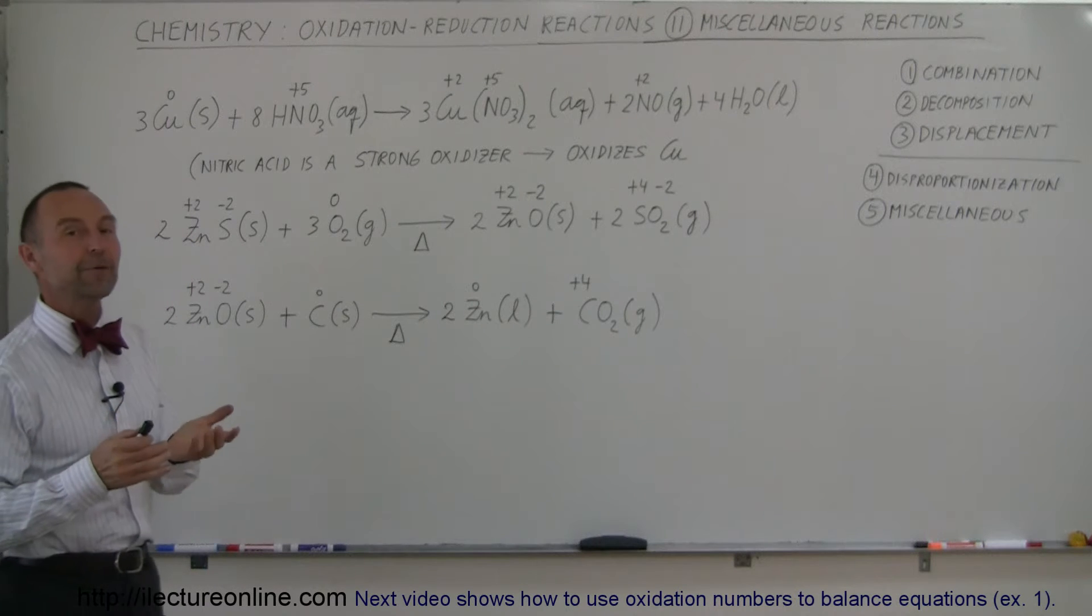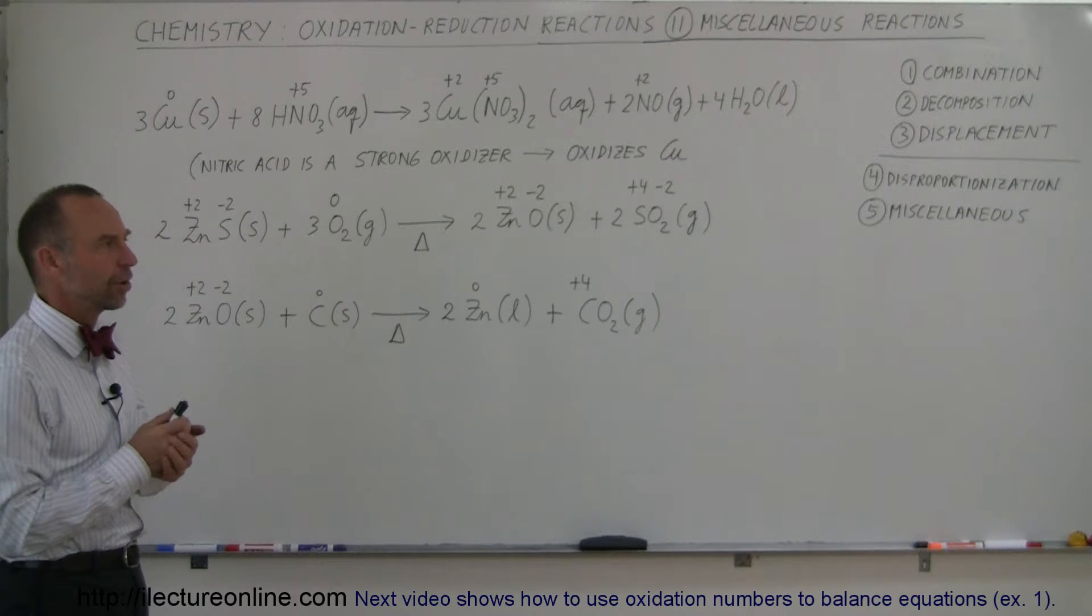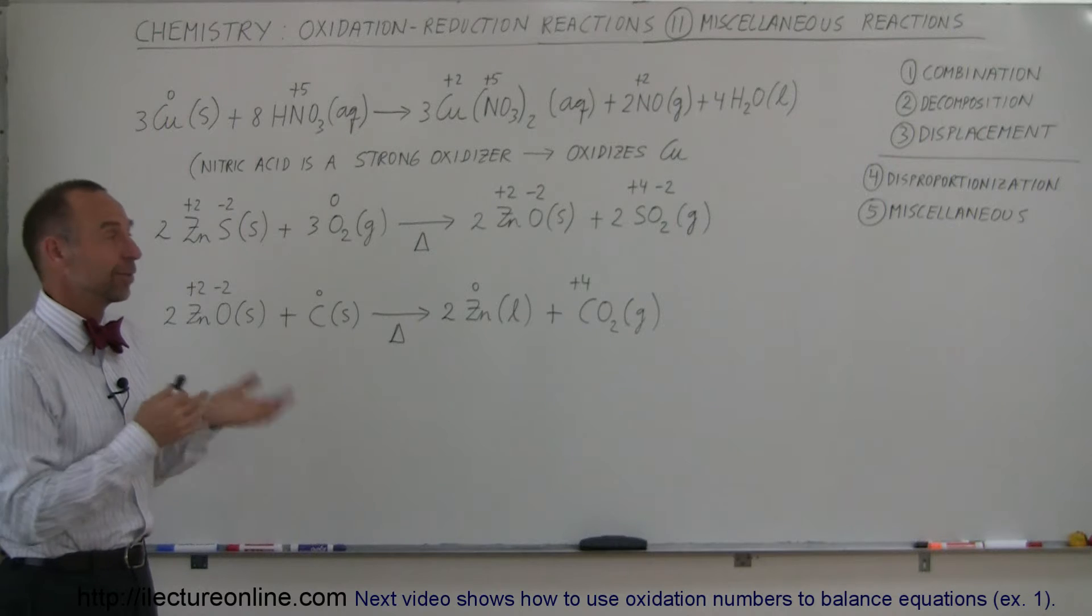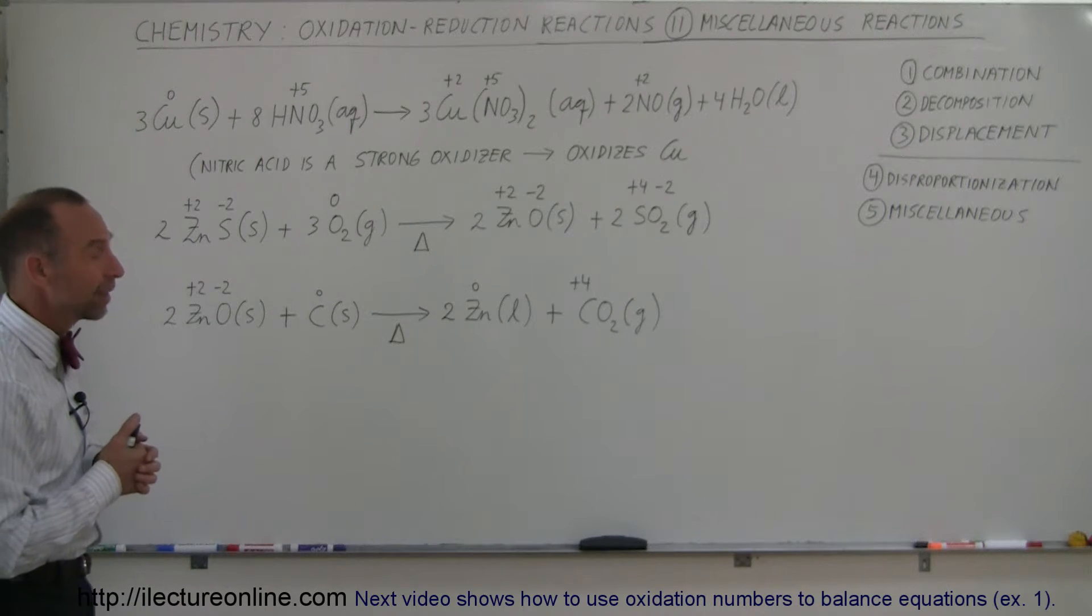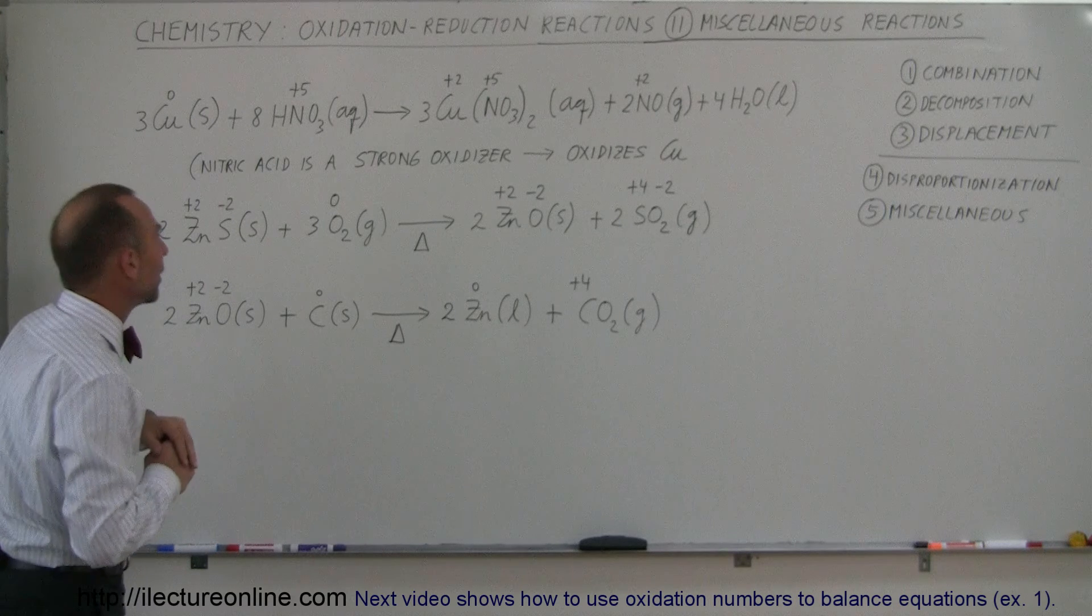Now we're going to take a look at a fifth type of oxidation-reduction reaction. It's called a miscellaneous reaction, and we call it miscellaneous because it doesn't really fall into any of the other categories. Let's take a look at a few examples.